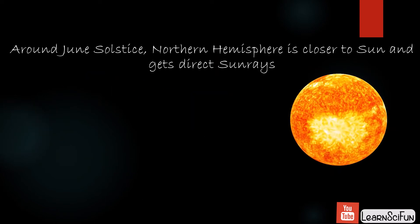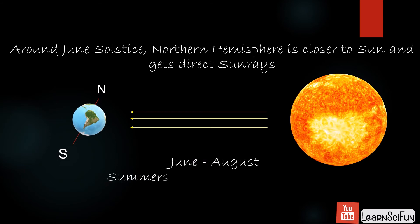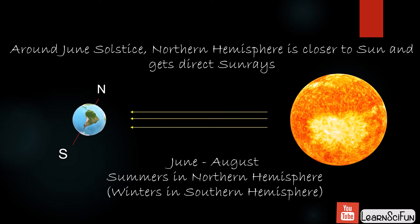Around the months of June, July, and August, the Sun's rays fall directly on areas above the equator, because the North Pole is tilted towards the Sun. Therefore, these are the summer months in the northern hemisphere, whereas the southern hemisphere experiences winter during these three months.